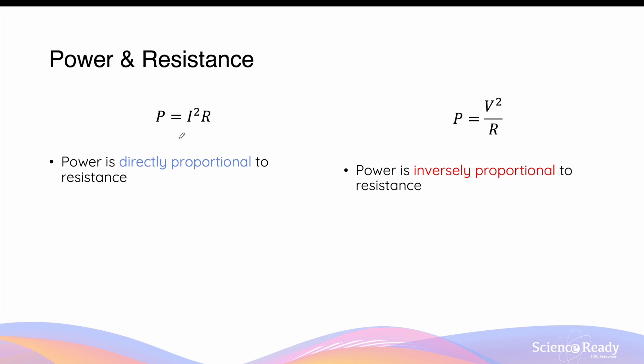The two equations for electric power outline two opposite relationships between power and resistance. In the first equation, in terms of current, it shows that power is directly proportional to resistance. Whereas in the equation in terms of voltage, power is inversely proportional to resistance.